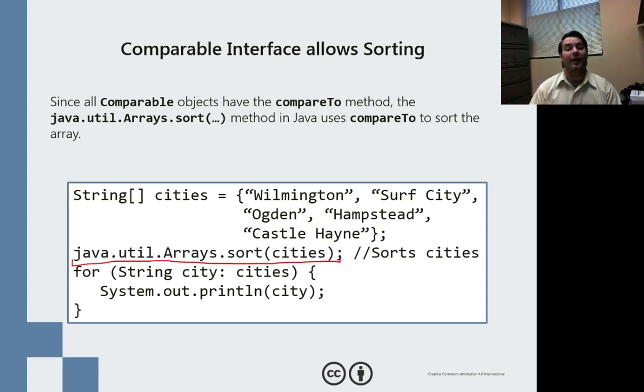it will automatically go in and do the compareTo and say, well, in this case, more cities. Wilmington, that's a W. Well, compared to Surf City, Surf City comes before Wilmington.